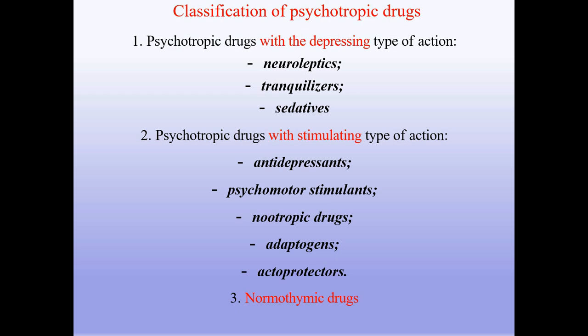Classification of psychotropic drugs. First, psychotropic drugs with a depressing type of action: neuroleptics, tranquilizers, and sedatives. Second, psychotropic drugs with a stimulating type of action: antidepressants, psychomotor stimulants, nootropic drugs, adaptogens, and actoprotectors. Third, normothymic drugs.